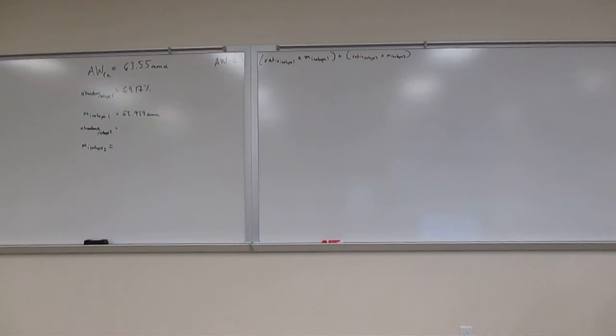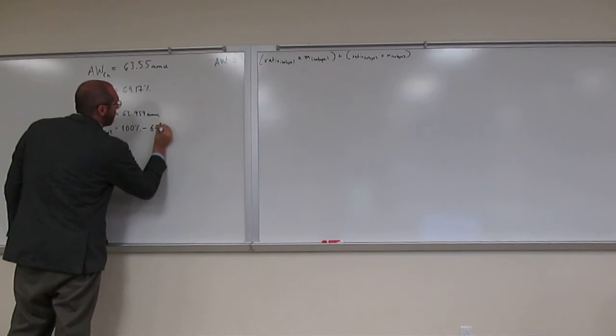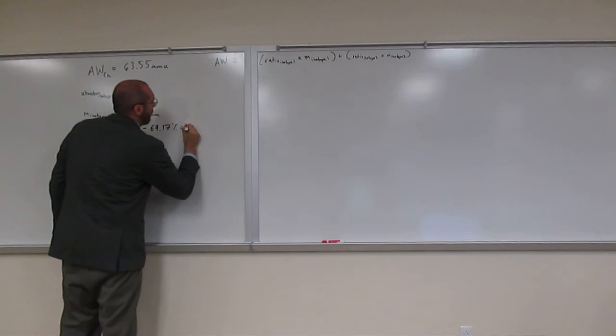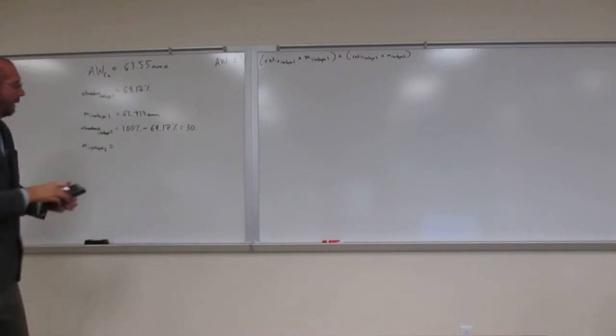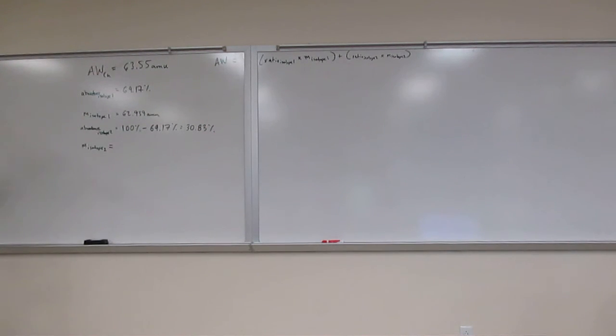So we're going to have to look at the abundance of the other one because it says there's only two naturally occurring, right? So that means this one plus this one have to be equal to 100%, right? Yes, exactly. So we take 100 and we subtract that, or we subtract that other isotope, 69.17. So 100% minus 69.17% and we get 30.83%. Okay, is everybody okay with how to get that?